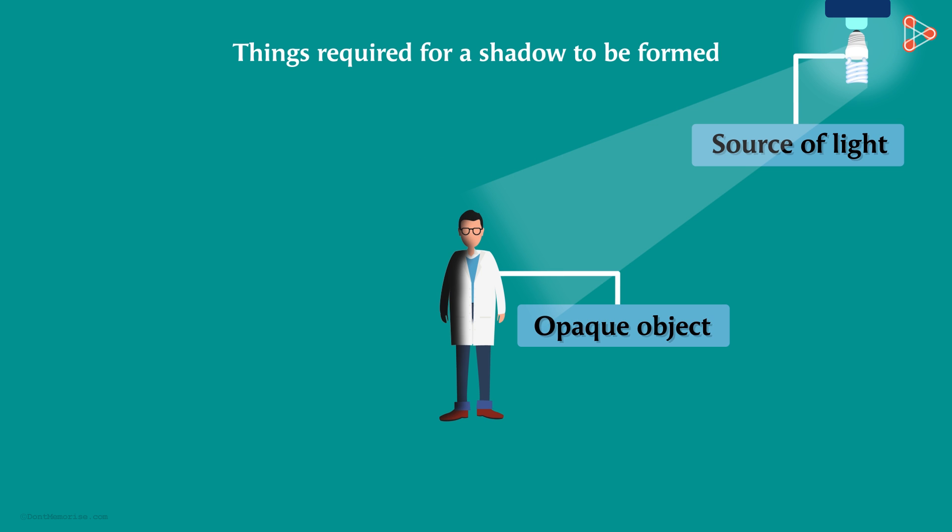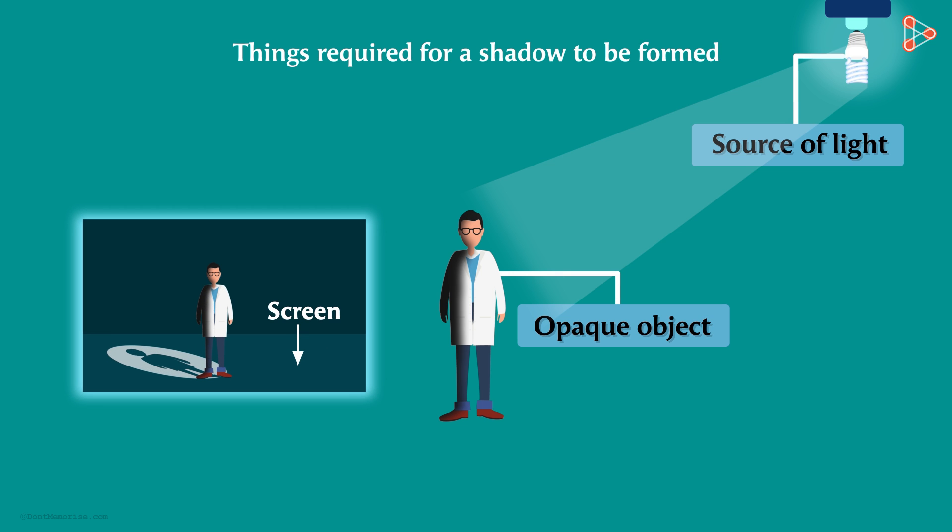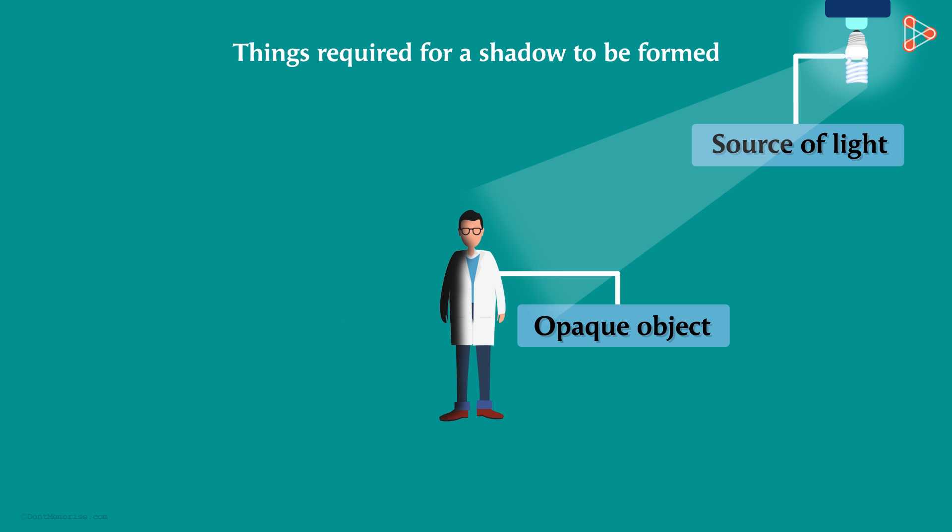No, we don't. Do you know why? Perplexed? Well, had there been a screen behind the opaque object, you would have seen the shadow on it. But because there is no screen or surface like in the previous case, we cannot see the shadow.